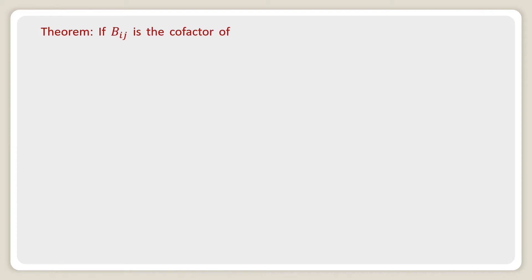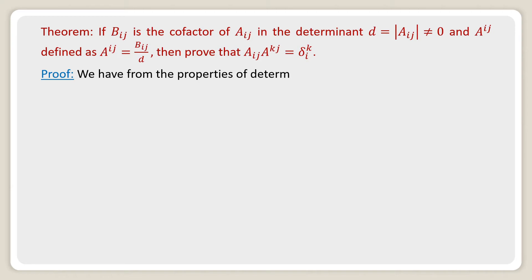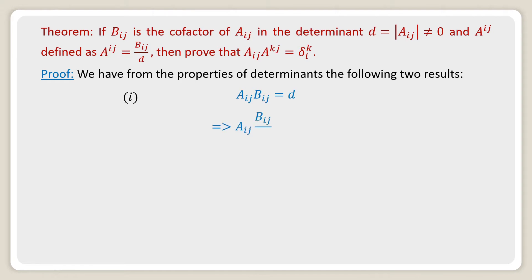Theorem. If Bij is the cofactor of Aij in the determinant D equals |Aij|, where D is not equal to 0, and A upper ij is defined as A upper ij equals Bij over D, then we have to prove that A upper ij into Akj equals Kronecker delta Ki. From the properties of determinants, property one: Aij into Bij equals D, which implies Aij into Bij divided by D equals 1. Substituting Bij over D equals A upper ij, we get Aij into A upper ij equals 1.